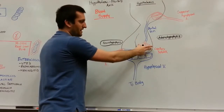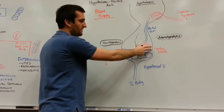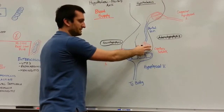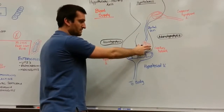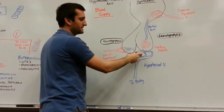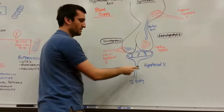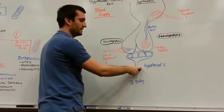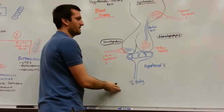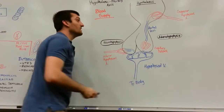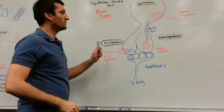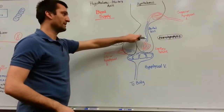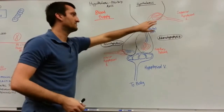The adenohypophysis will release its hormones and then send those also to the hypophyseal vein, which will go to the body again. One important note is the portal vein.